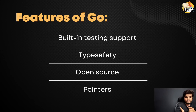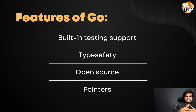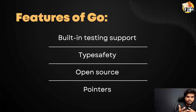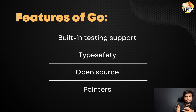Type safety — as discussed previously, Go is a statically typed programming language, so type safety is inbuilt. Go is also open source. As we discussed, it is open source, and now many organizations and big tech giants are opting for Go.